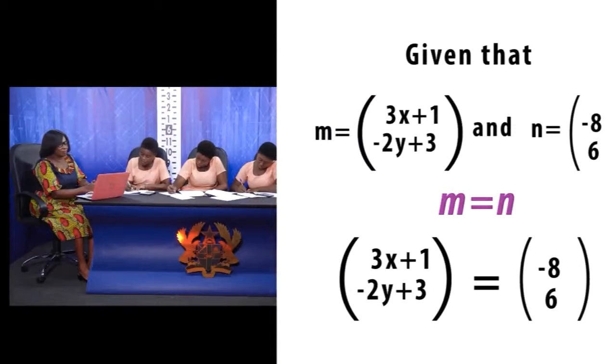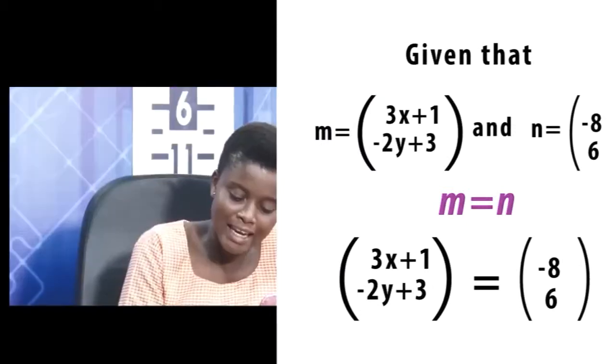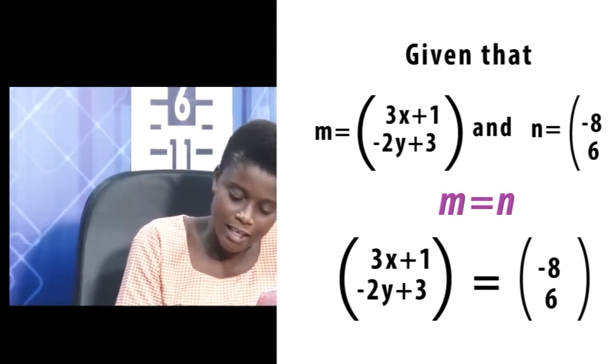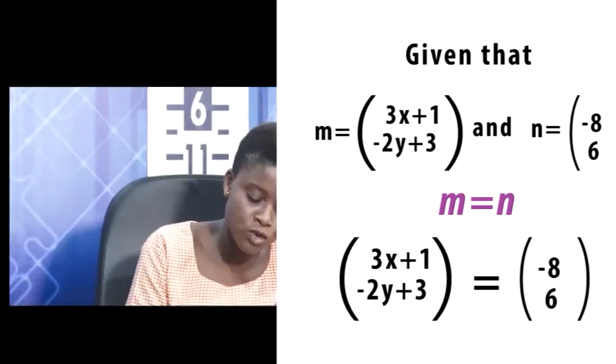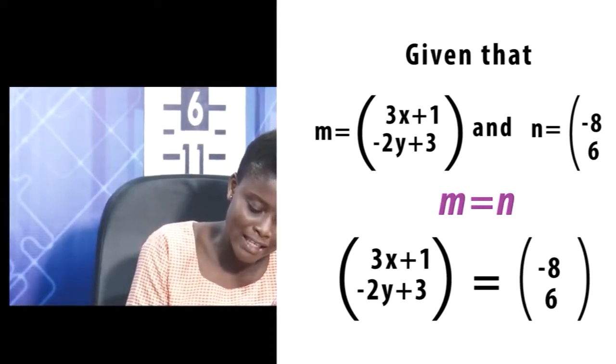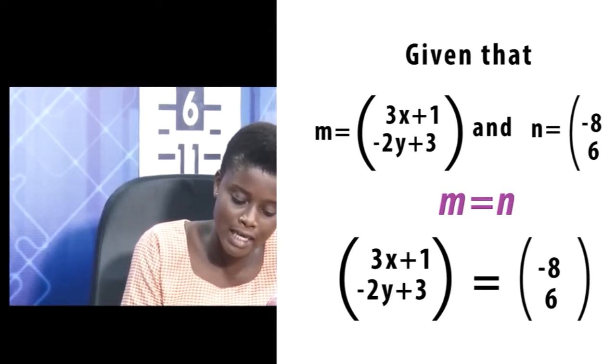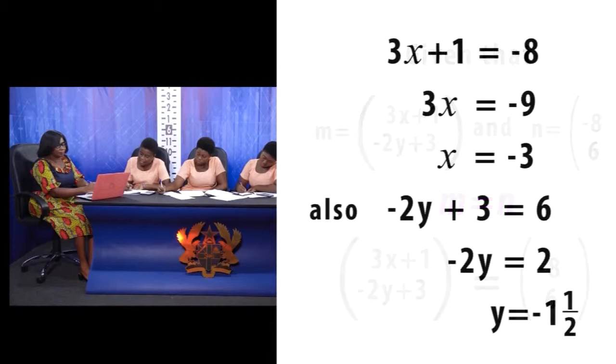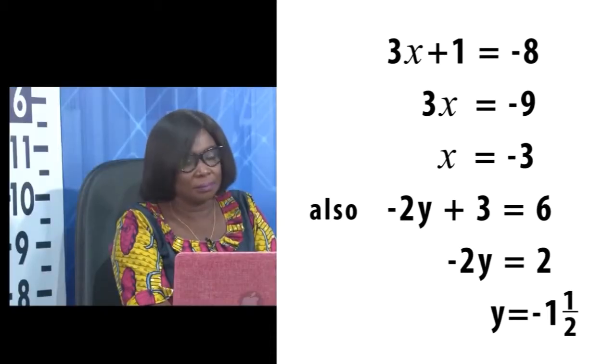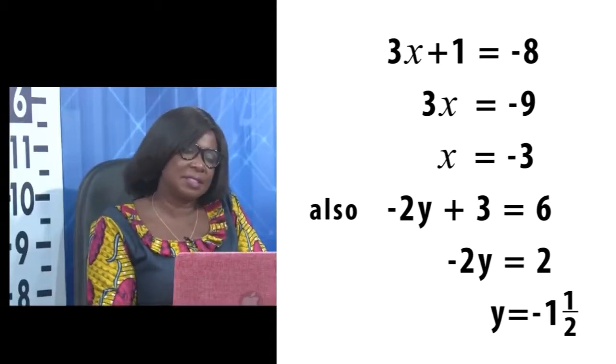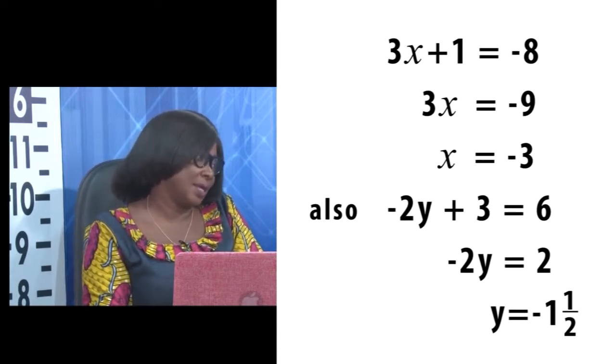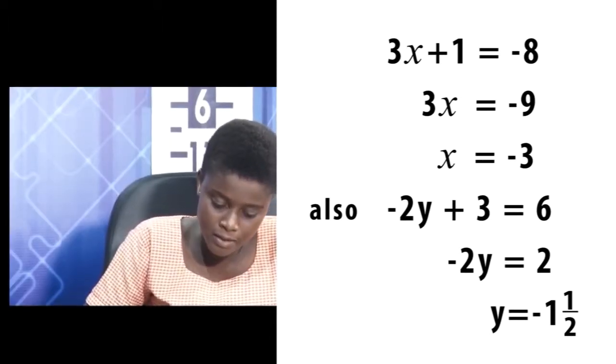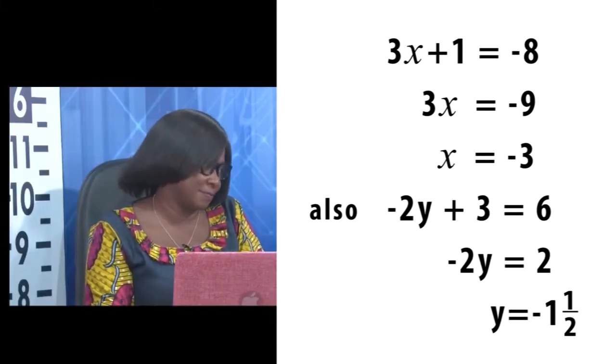M has been given in the question to be (3X + 1, -2Y + 3) and N given as (-8, 6). I'm going to equate the X component which is 3X + 1 = -8, giving me 3X = -9 and X = -9/3, giving me X to be -3. Okay, so you have X to be negative 3. It means that when you equated the X components, you solved for the value of X. Yes, please. By making X the subject. And you have X to be equal to negative 3.